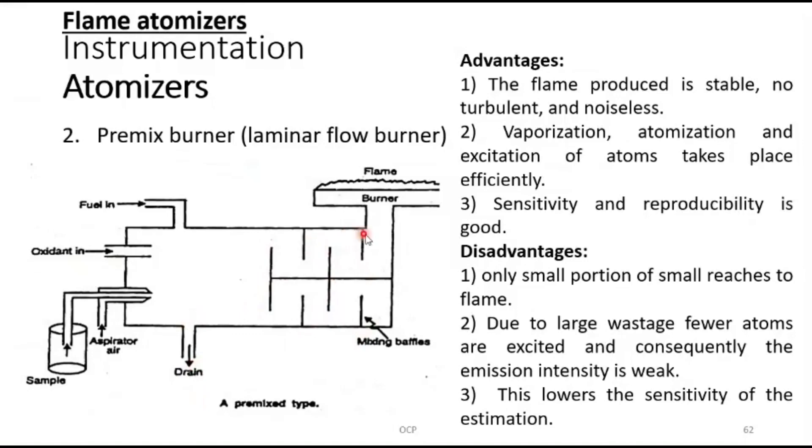Fuel, oxidant, and sample will get mixed here. If there are large droplets, they will be blocked by these baffles. Those will be trapped and drained down. In this region you will get very fine droplets of the sample, like water droplets in cloud, mixed with fuel and oxidant, then entering the burner.